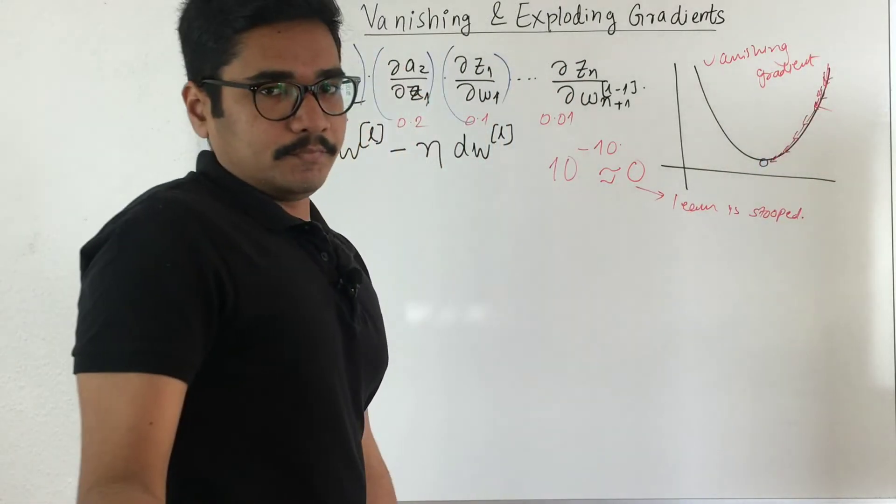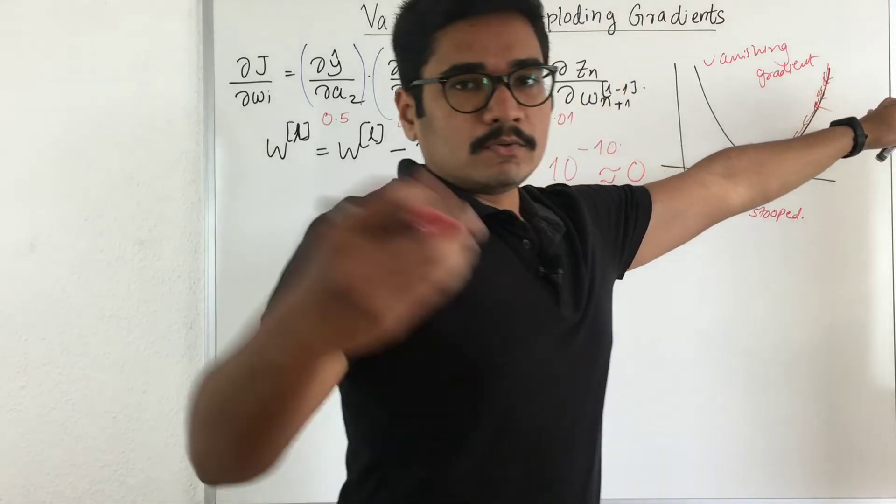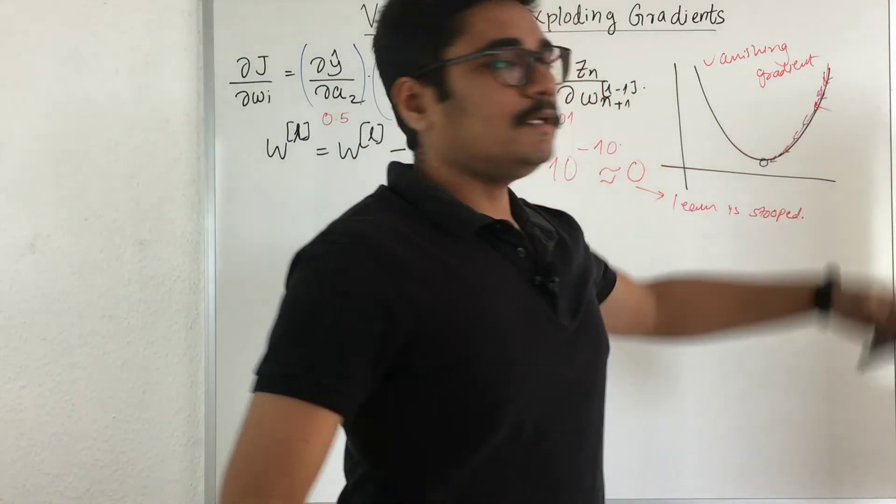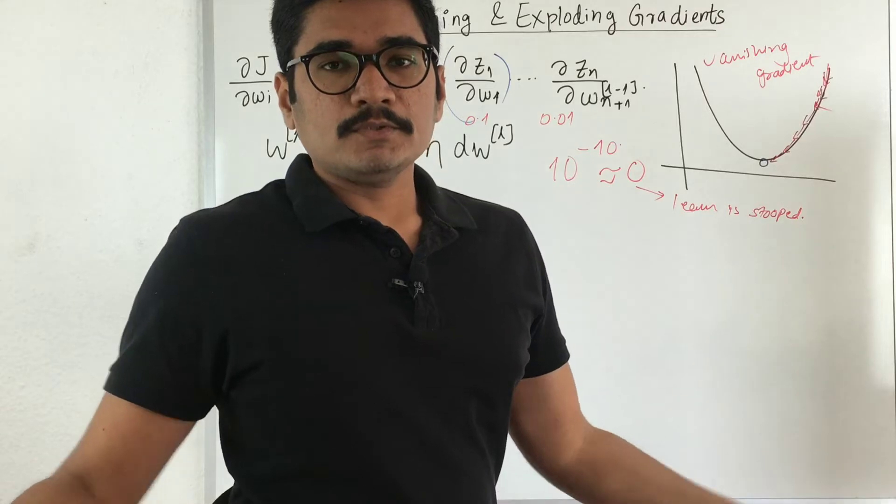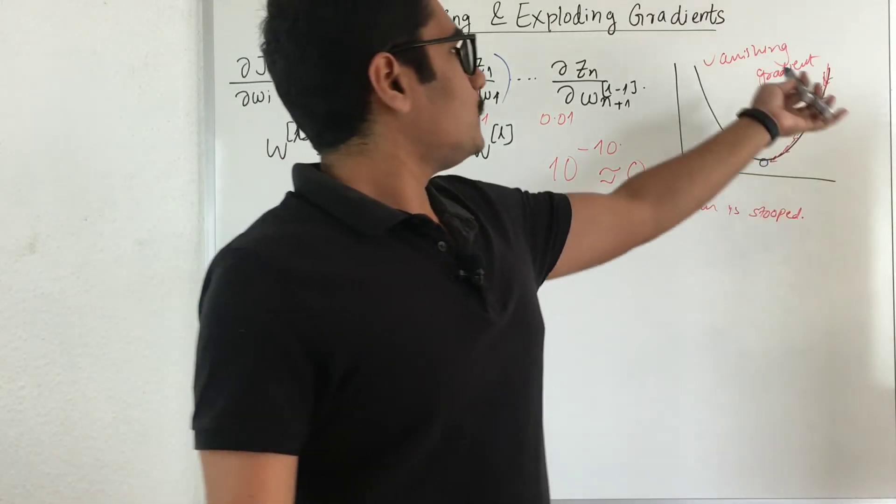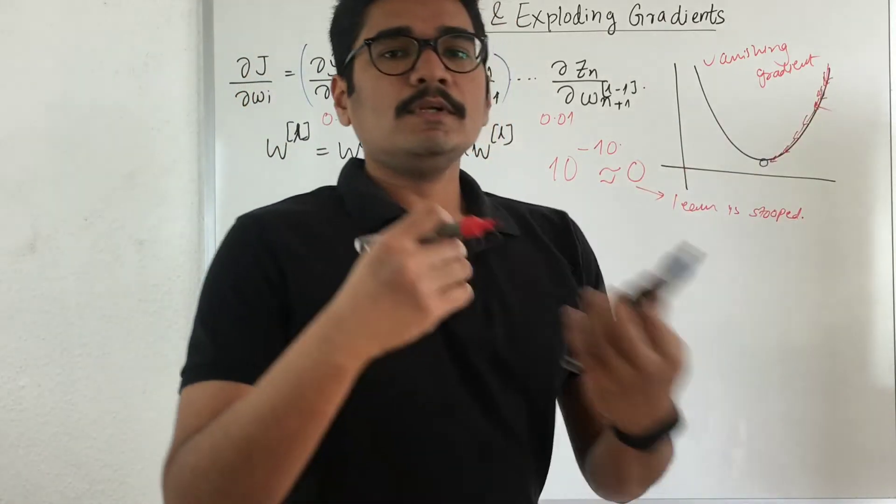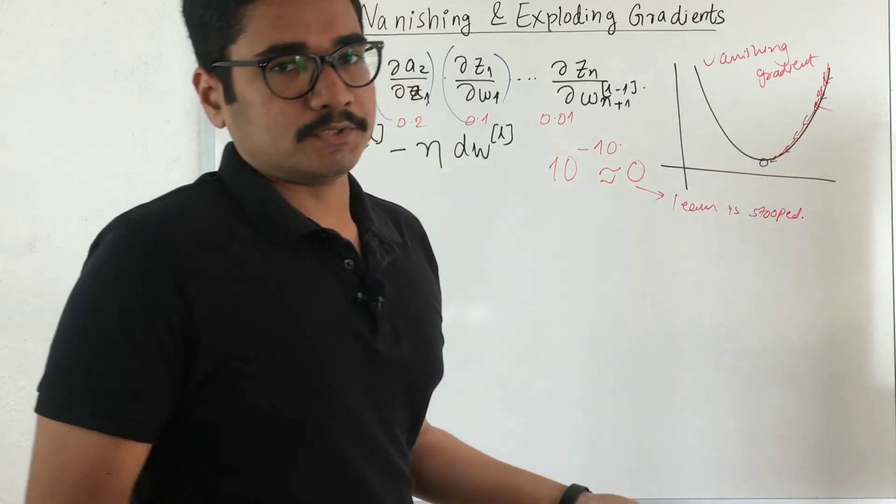You vanished somewhere in between. You can say like you went outside to buy something but in the middle someone just kidnapped you, so you just got vanished. Your parents don't know where you went. Similarly is the case with vanishing gradient. You don't know what happened somewhere in the middle. You just stopped learning for this particular function.